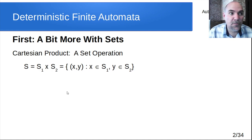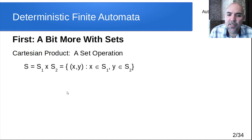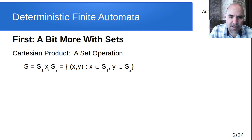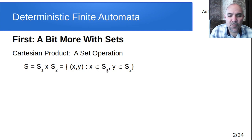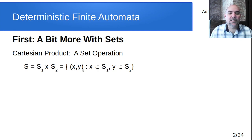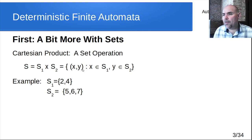This is going to be useful for what we're doing today. Cartesian product is a set operation. If we have two sets, set one and set two, we can use the cross operator — the Cartesian product operator — and that produces a new set. The Cartesian product S1 crossed with S2 creates a set of pairs, where the first element of the pair is from set one and the second is from set two. It gives every possible combination of elements in pairs.